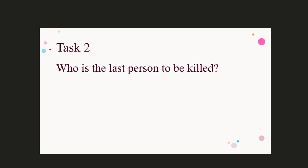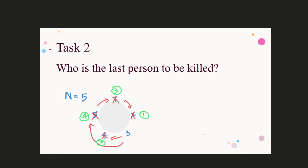Here is the second task: who is the last person to be killed? We let L stand for the number of the last person to be killed. In the example of 5 persons, 2 is the first to be killed, 4 is the second, 1 is the third, and 5 is the fourth and last to be killed. So L is 5. Our task is: when N is 456, find the value of L.